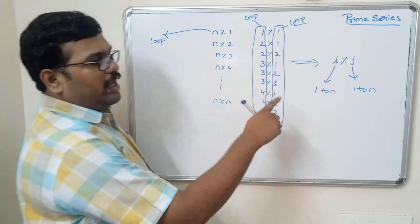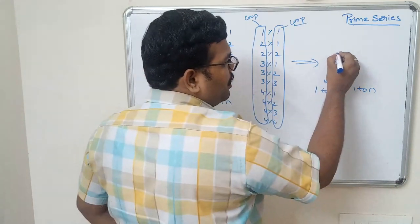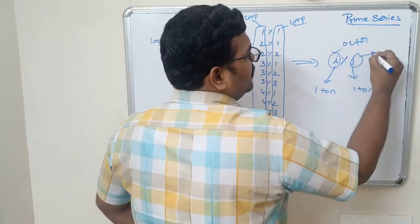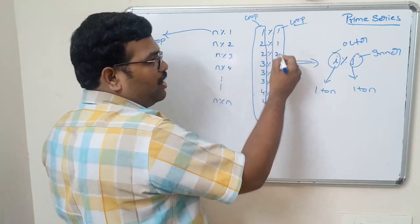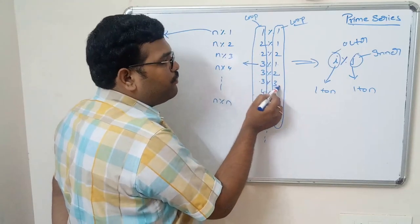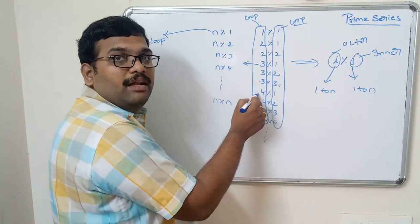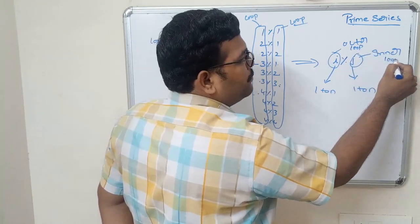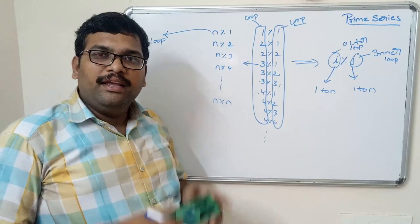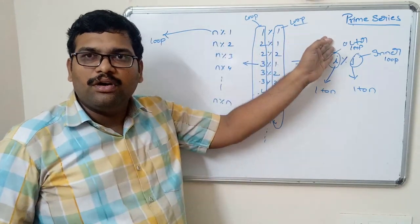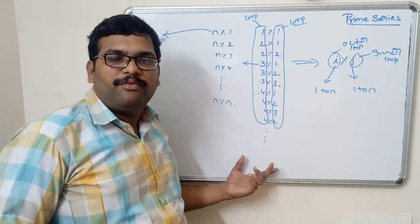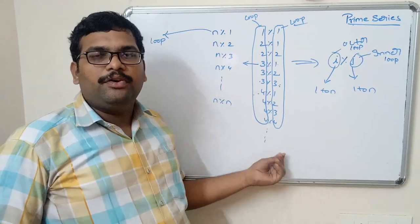Where i ranges from 1 to n and j ranges from 1 to n. After completion of this loop, we write the next loop — this will be the outer loop and this will be the inner loop. The remaining logic is the same: check the mod operator, and if the mod operation equals zero, increment one variable. Finally check if that variable equals 2 to determine if the number is prime.